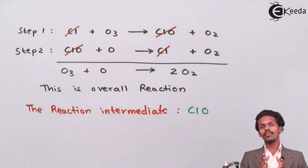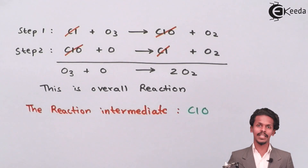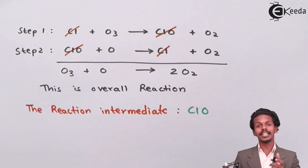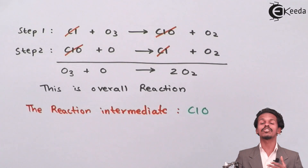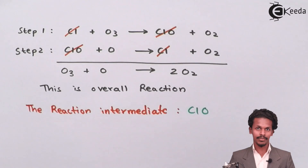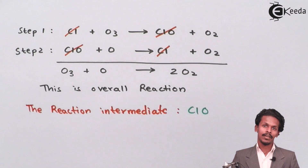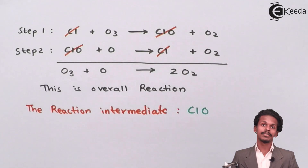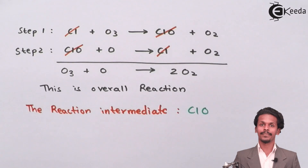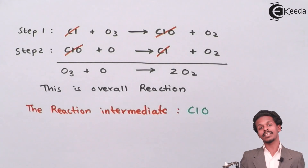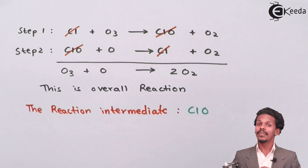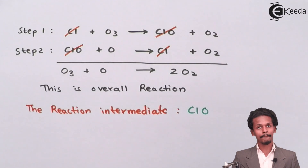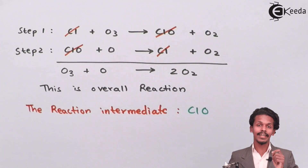For the third requirement, we must identify the catalyst. A catalyst is a substance that increases the rate of reaction, but the key criterion is that once it is consumed in the reaction, it is also regenerated as a product — it can be separated out unchanged after the reaction.